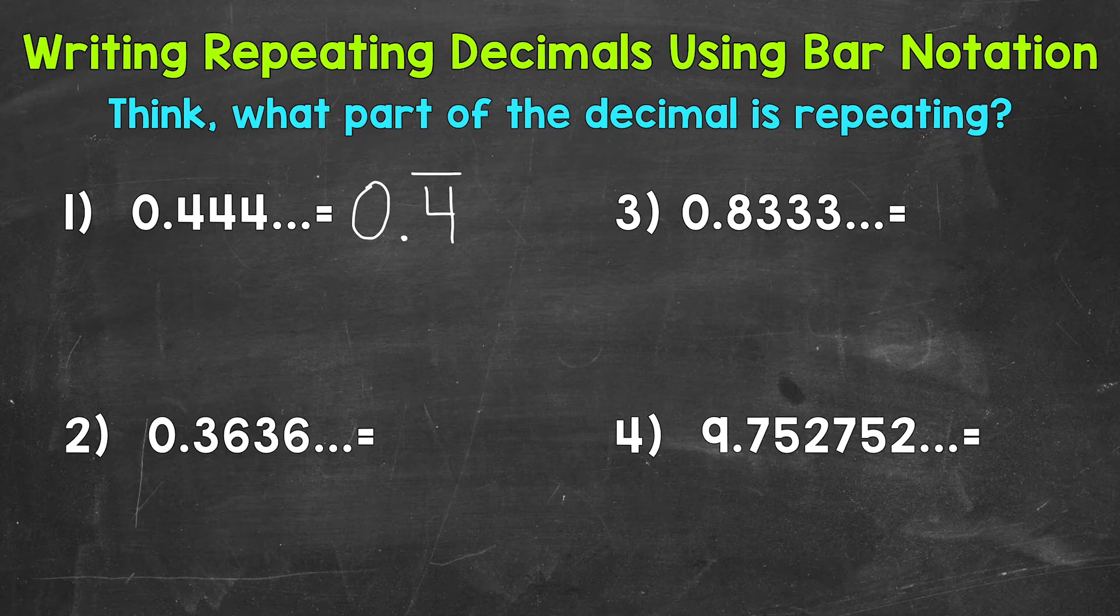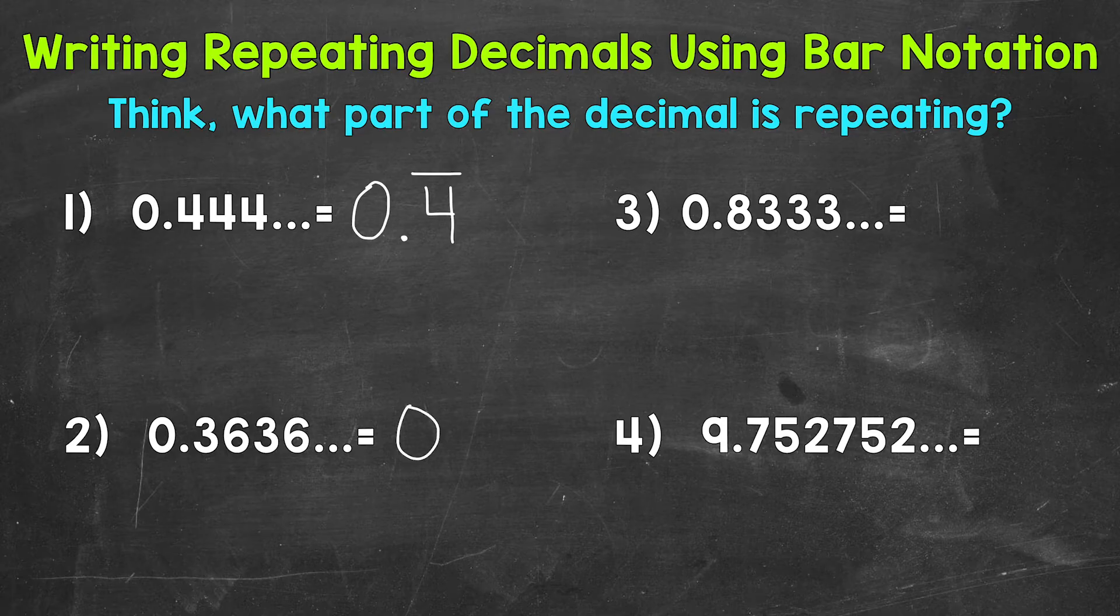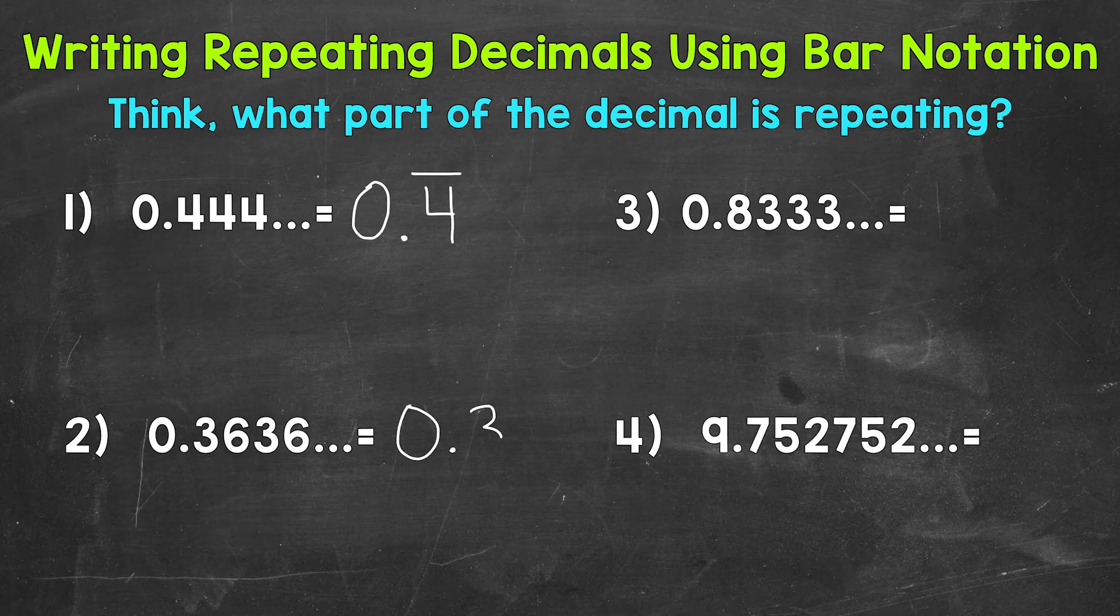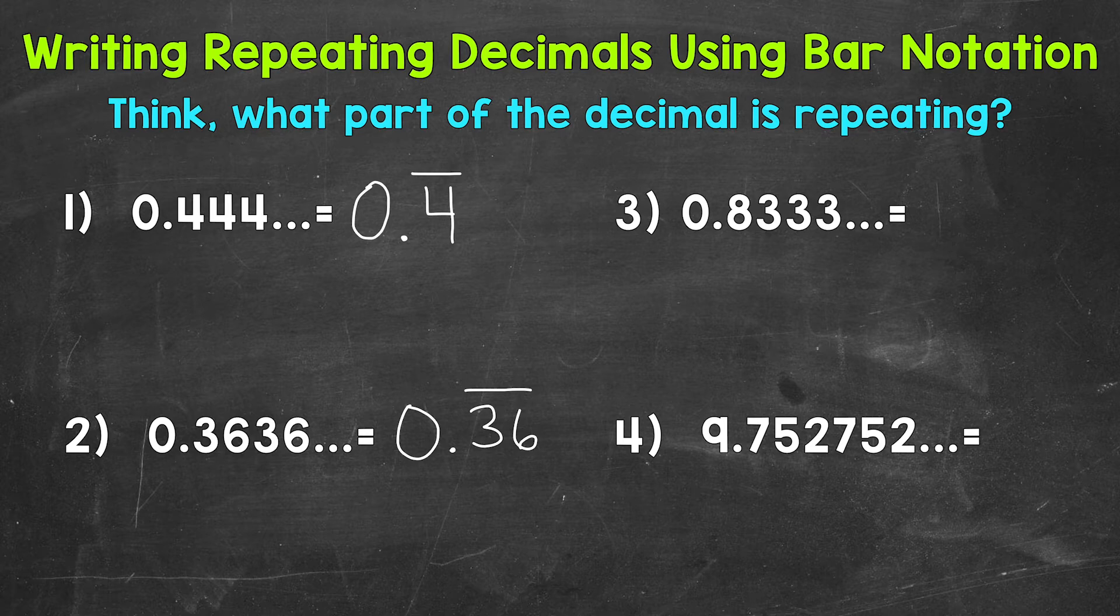Let's move on to number two, where we have 0.3636 repeating. Here we have two digits that repeat. We would write 0, the decimal, and then the two digits that repeat, the 3 and the 6, with a bar above both of those digits because both of them repeat. That's how you would write 0.36 repeating using bar notation.